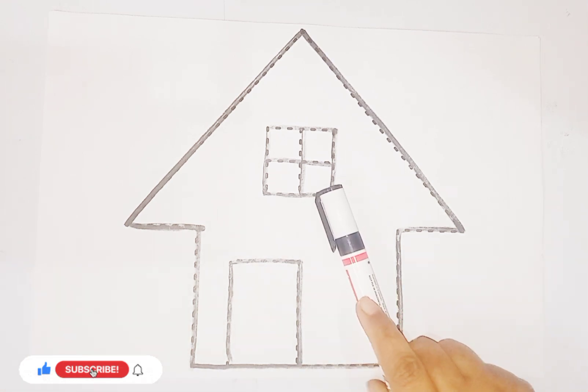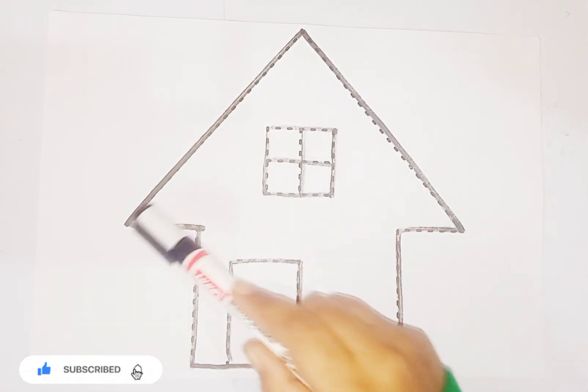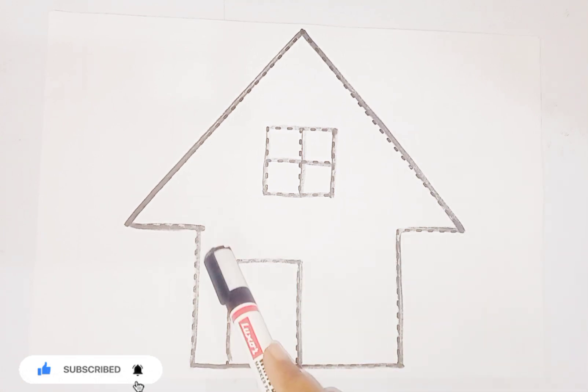This is a shape house. These are square, triangle, rectangle. And this one is rectangle.